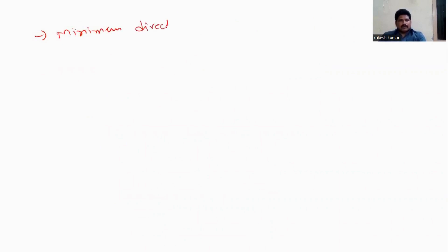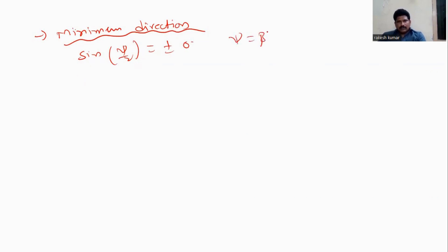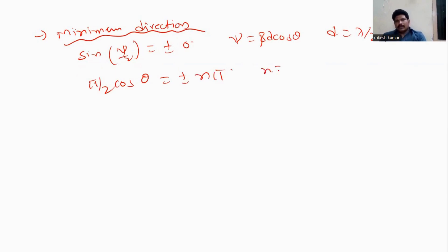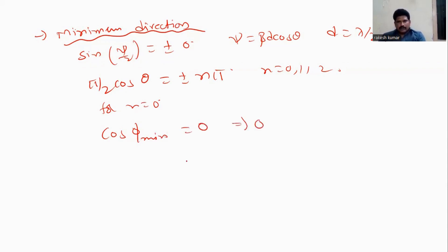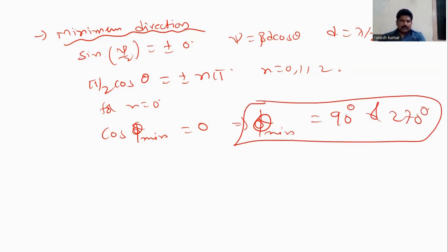For minimum radiation, the condition is sin(ψ/2) = 0, where ψ = βd·cosθ and d = λ/2. This gives π/2·cosθ = ±nπ, where n = 0, 1, 2, and so on. For n = 0, cosθ = 0, giving θ_min equals 90 degrees and 270 degrees.